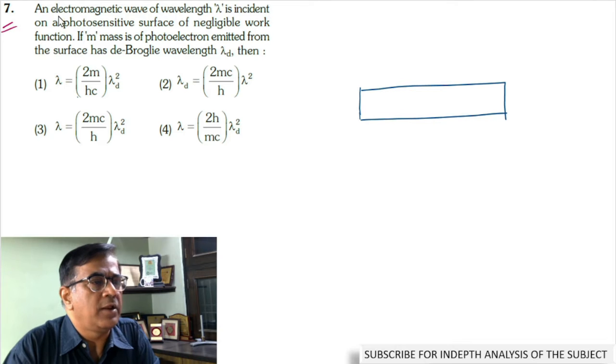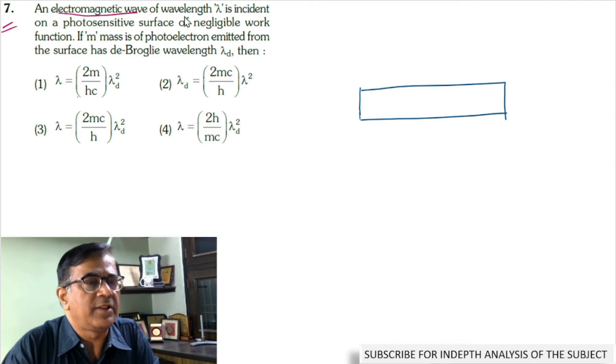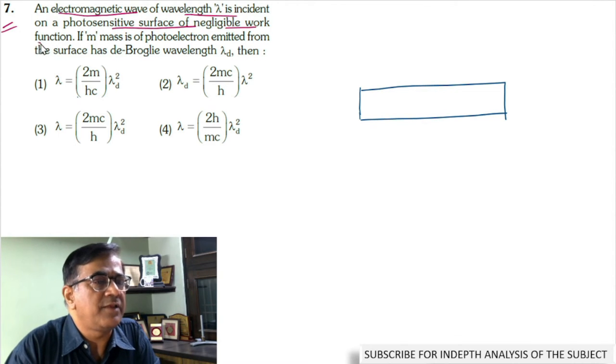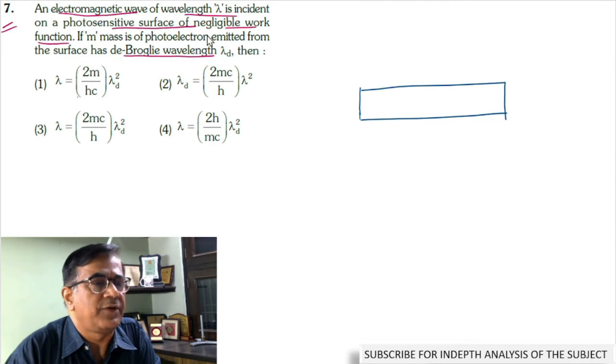In this problem, an electromagnetic wave of wavelength lambda is incident on the surface of a photosensitive material. The work function of the photosensitive material is negligible. We are supposed to find the De Broglie wavelength of the emitted photoelectron.